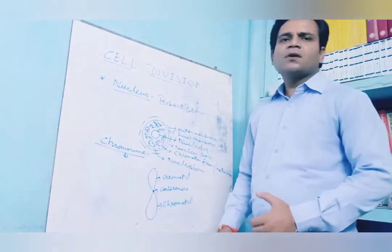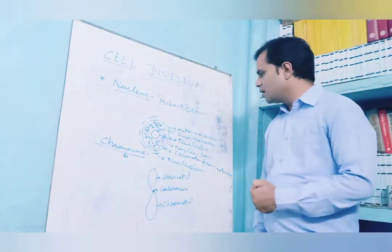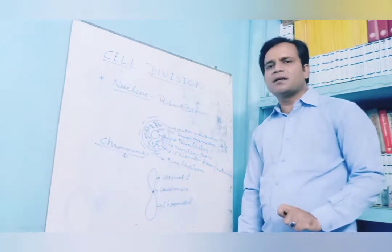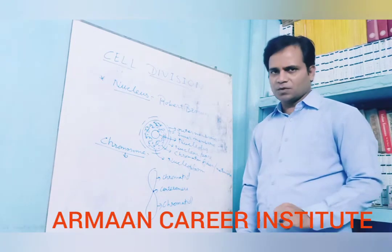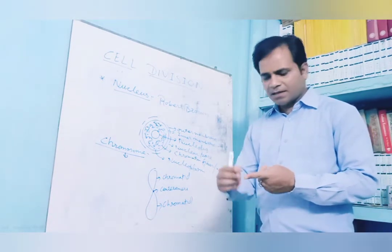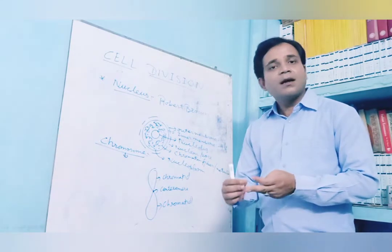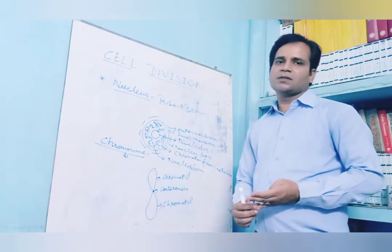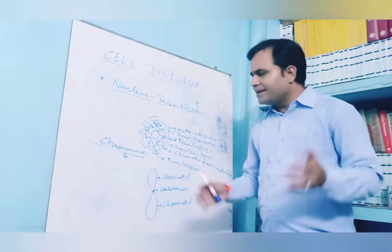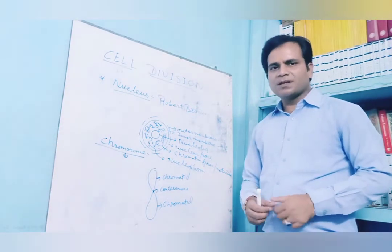There are basically four types of chromosomes on the basis of the attachment of the centromere: metacentric, submetacentric, acrocentric, and telocentric. The details of the types of chromosomes will be covered in the next video.